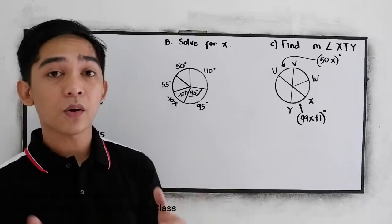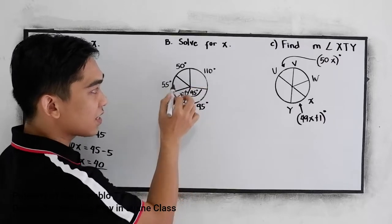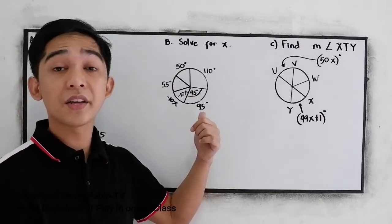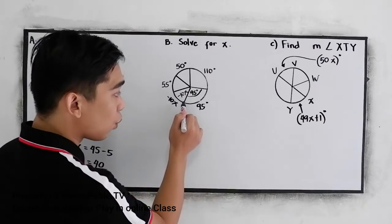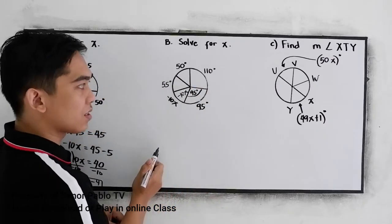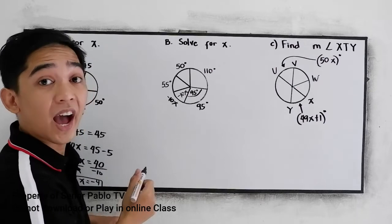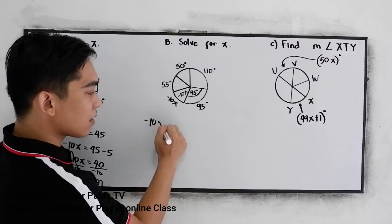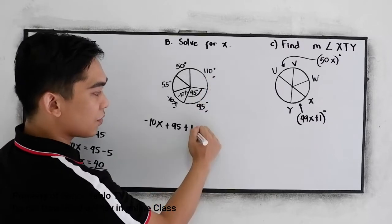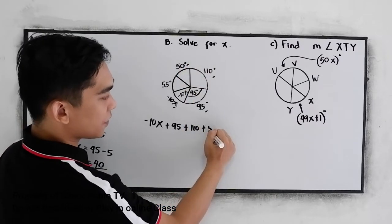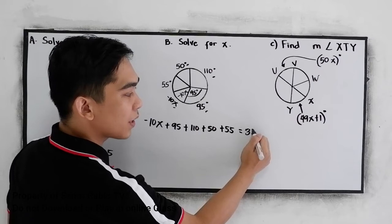The principle we're going to use is that all the arcs in a circle sum to one full revolution, which is equal to 360 degrees. That means if we add all the given arcs, they equal 360 degrees. So: negative 10X plus 95 plus 110 plus 50 plus 55 is equal to 360 degrees.